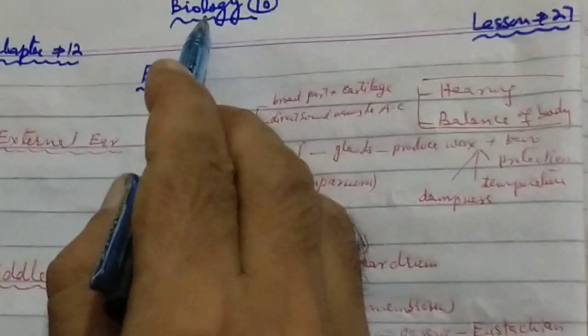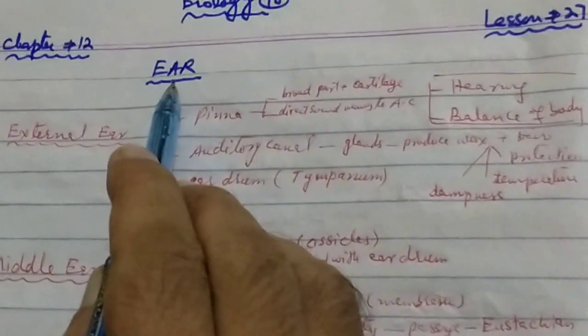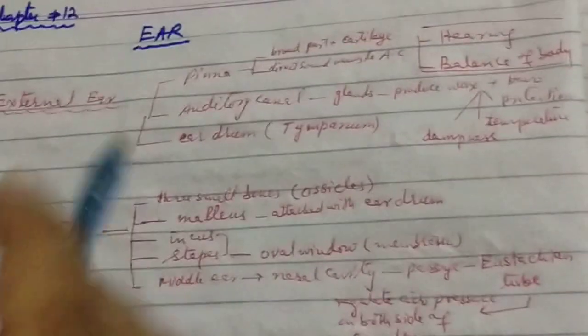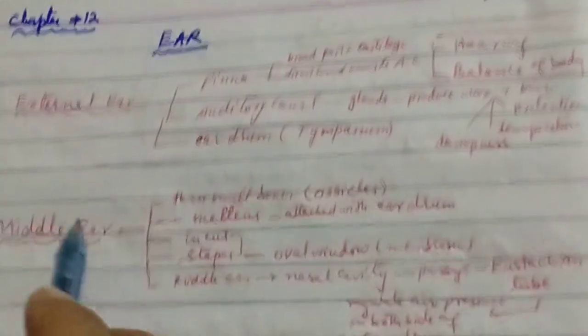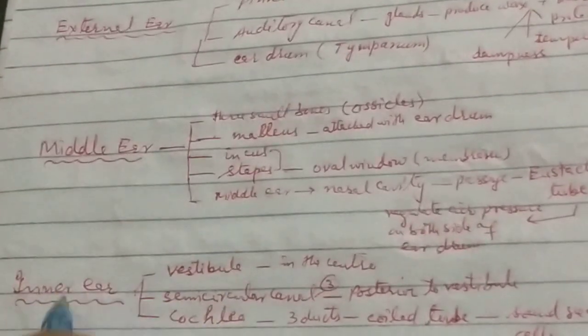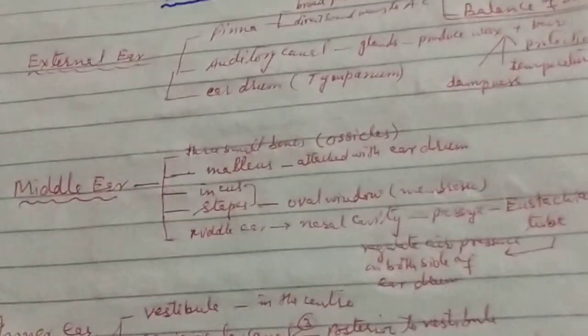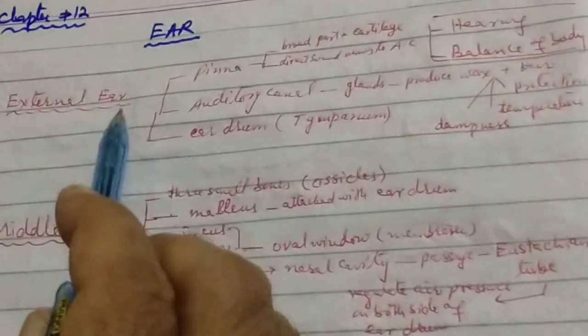In the 10th class of bio, we will study the topic of human ear. The three parts of human ear: one is external ear, middle ear, and inner ear.